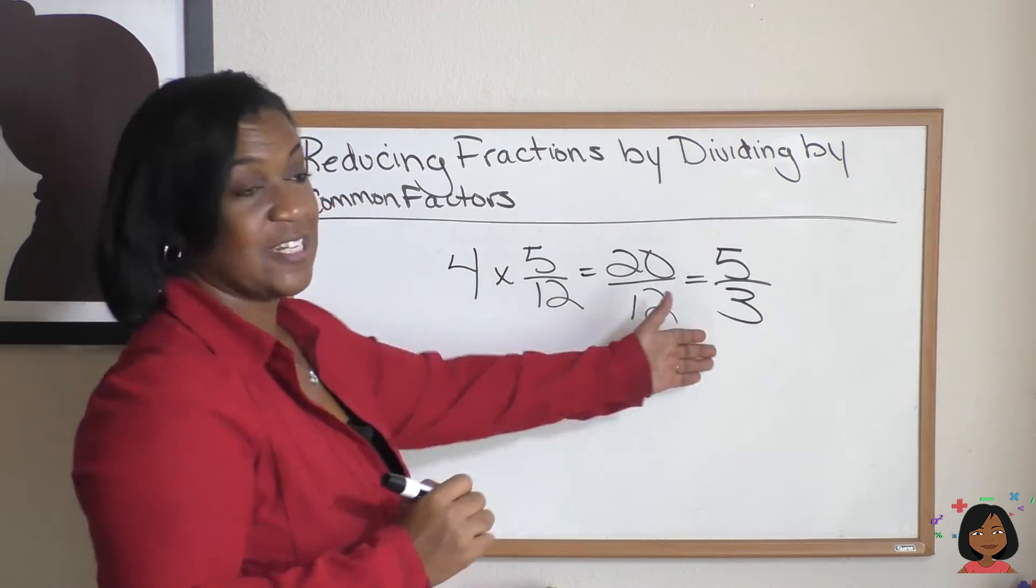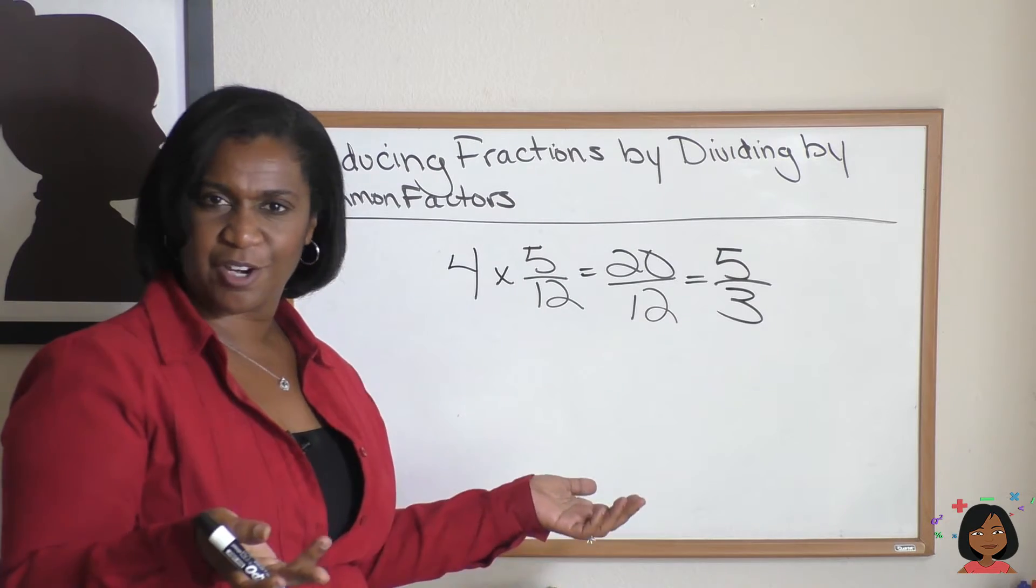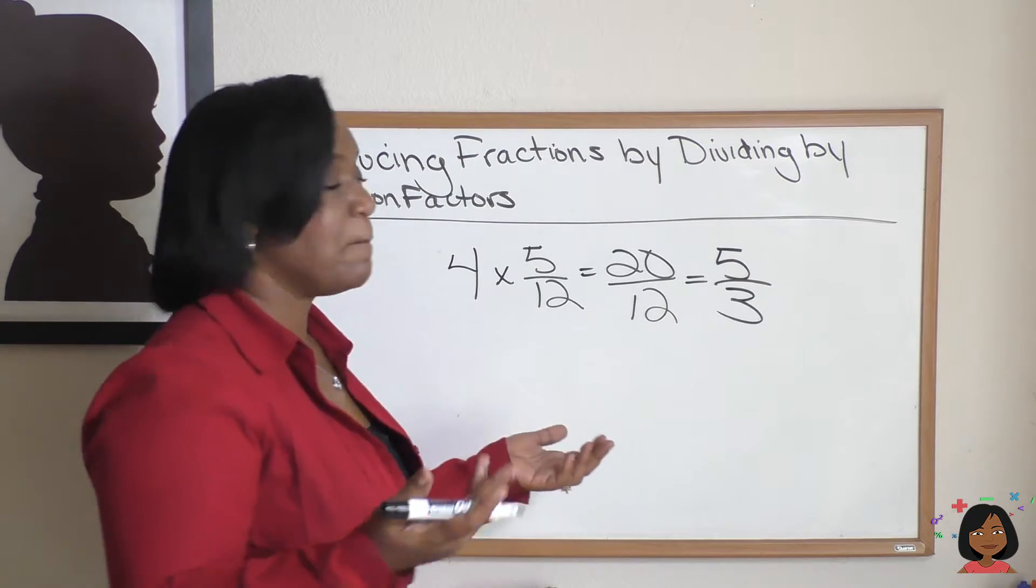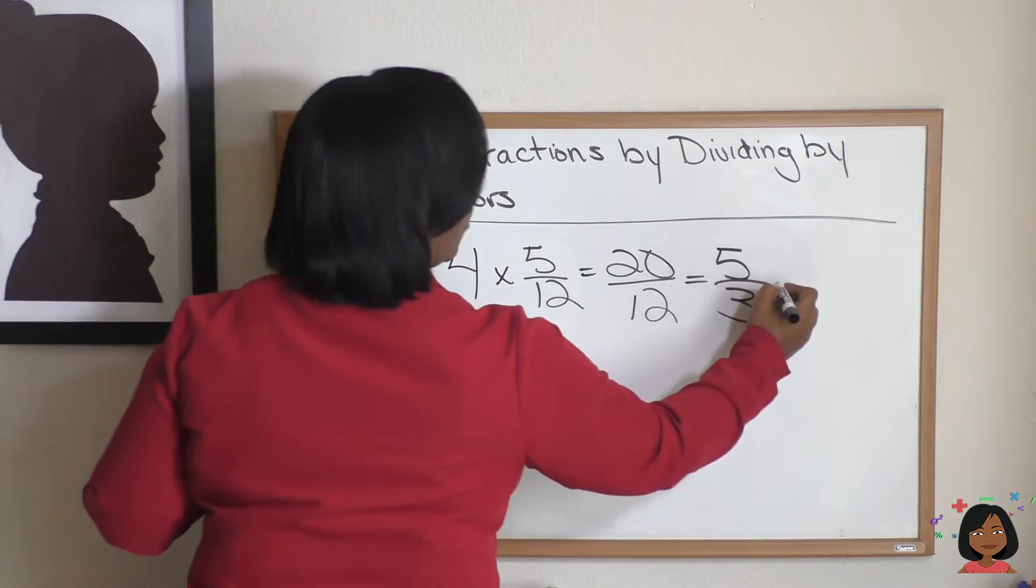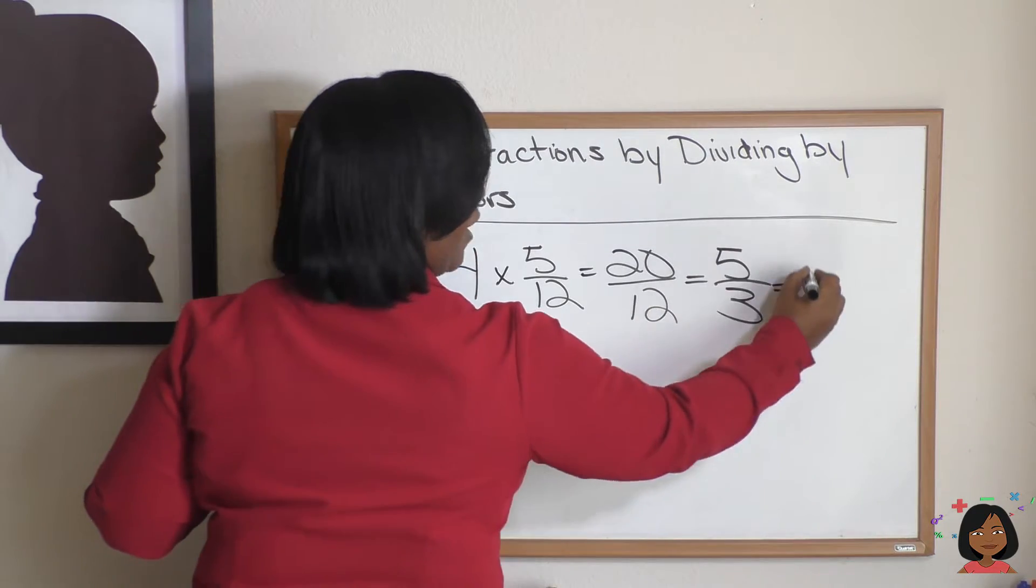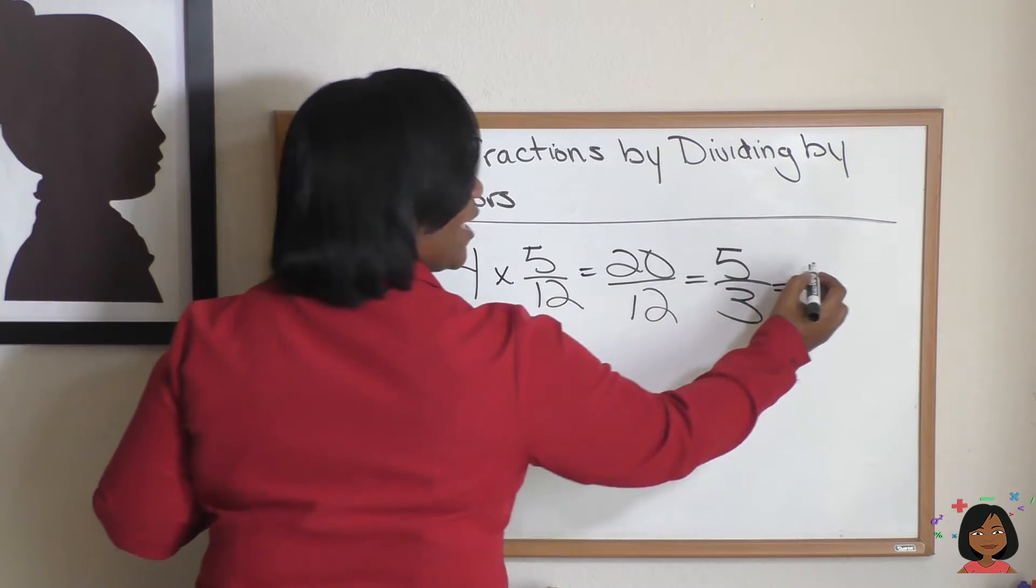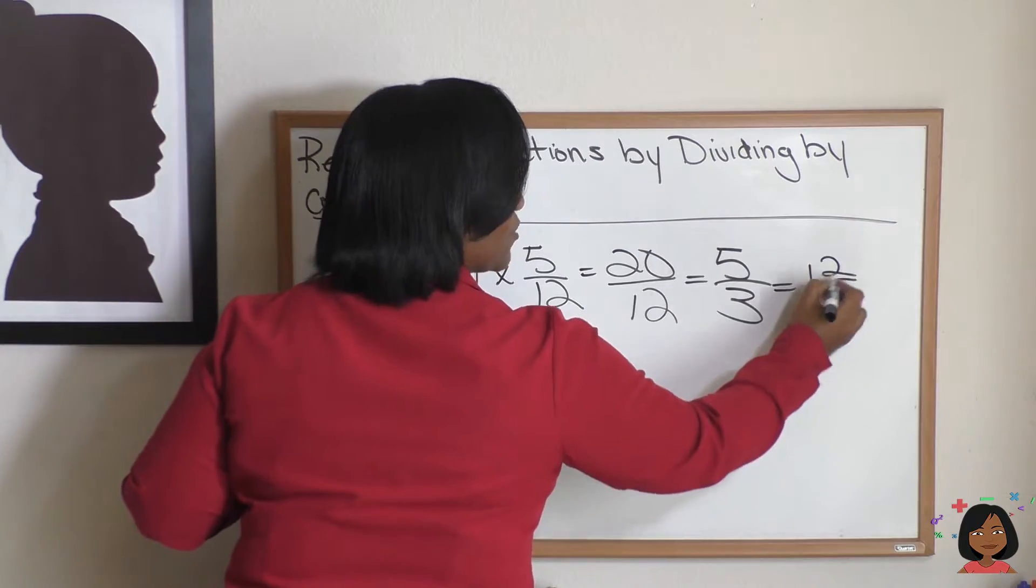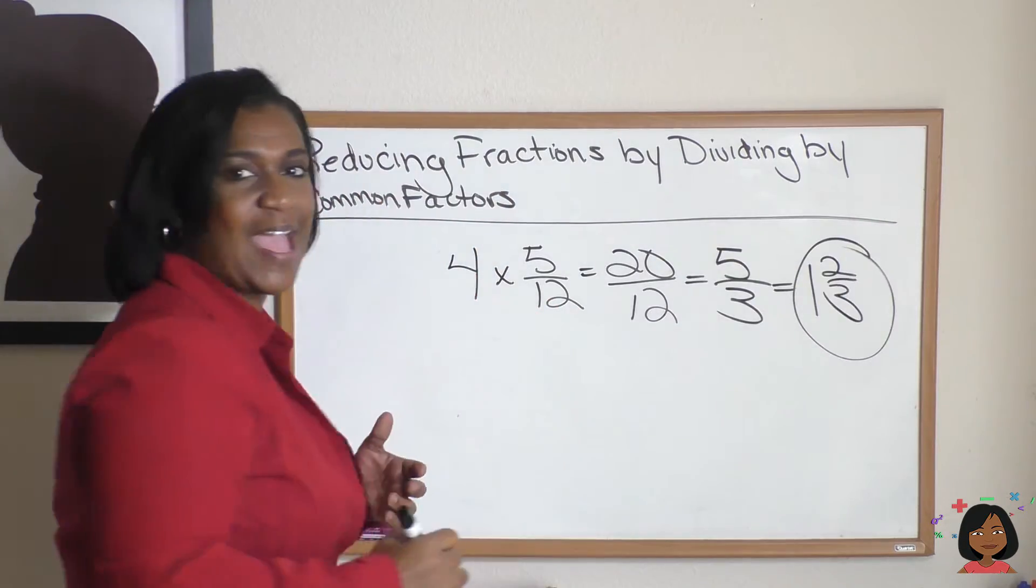Now, it's an improper fraction, but it makes it a little bit easier to figure out what that mixed fraction is going to be. We know 3 goes into 5 one time and 2 is left over. So our mixed fraction is 1 and 2/3.